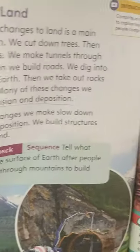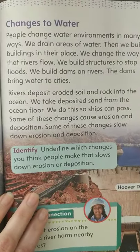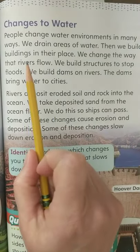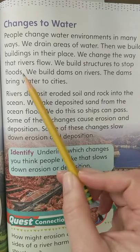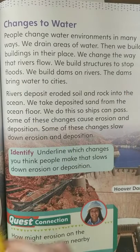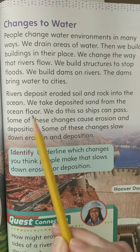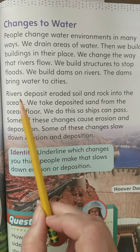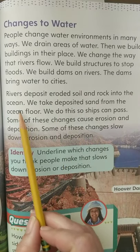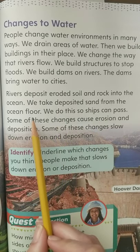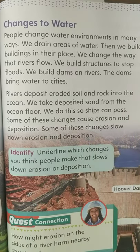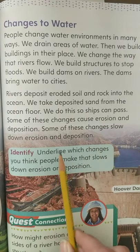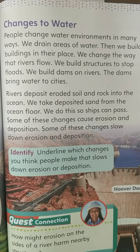Changes to water — let's see what we do to change the water around us. People change water environments in many ways: we drain areas of water and then build buildings in their place; we change the way rivers flow; we build structures to stop floods; we build dams on rivers. The dams bring water to cities. Rivers deposit eroded soil and rock into the ocean, and we take deposited sand from the ocean floor so ships can pass. Some of these changes cause erosion and deposition; some slow it down.